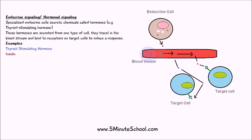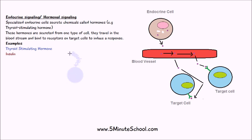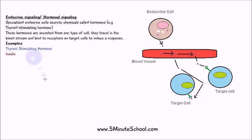The hormone travels through the bloodstream, then moves out of the blood vessel and binds to target cells. The key point is that this involves a much greater distance for the signal molecule to travel. Examples of endocrine signaling include thyroid stimulating hormone and insulin.